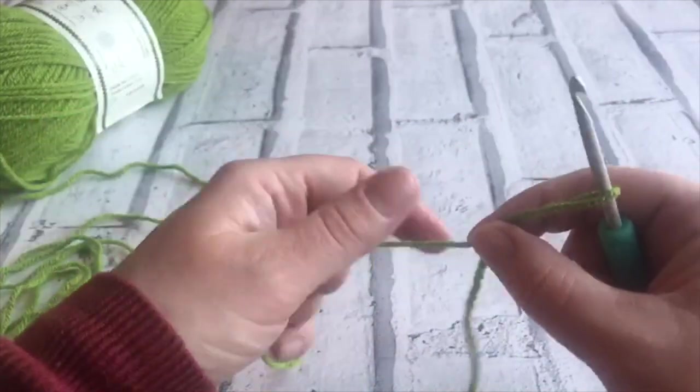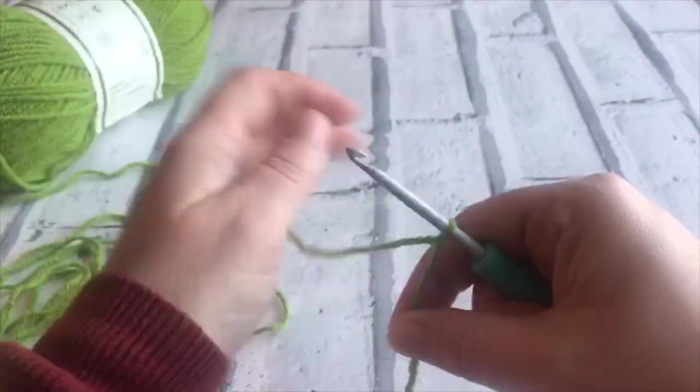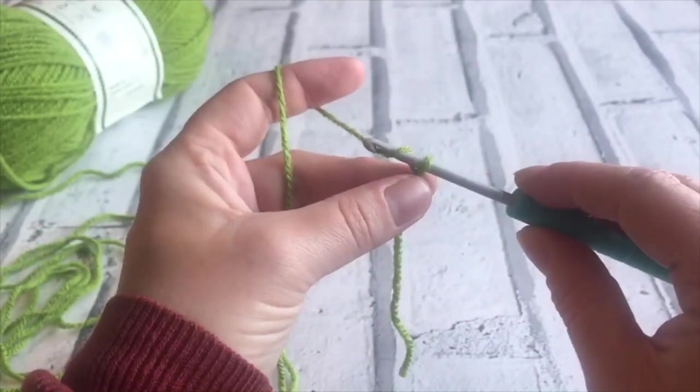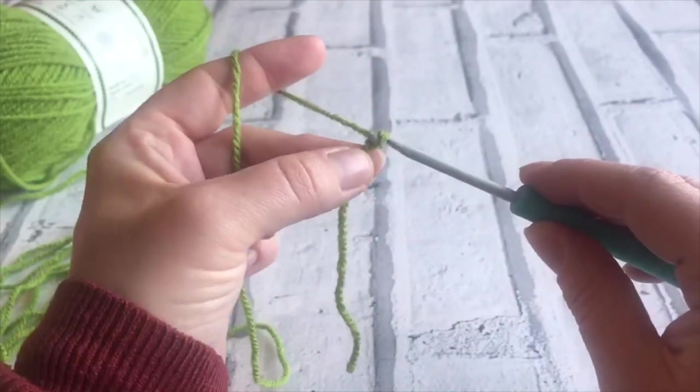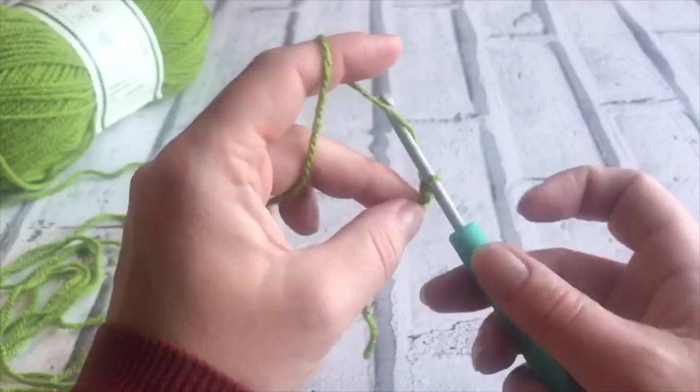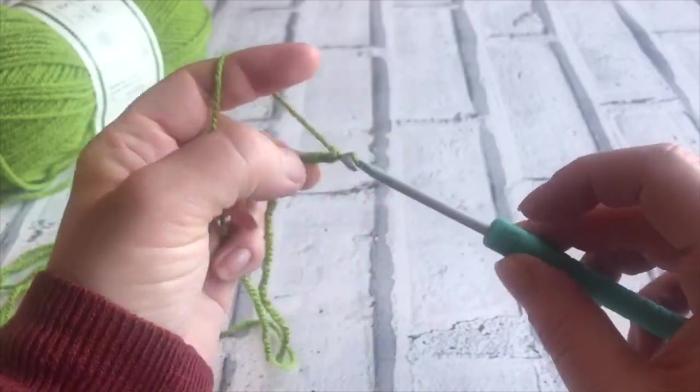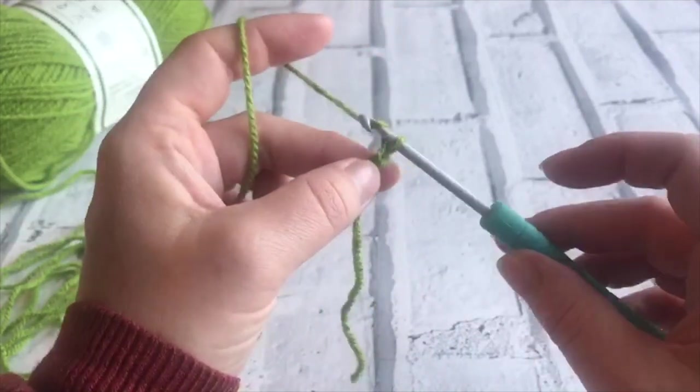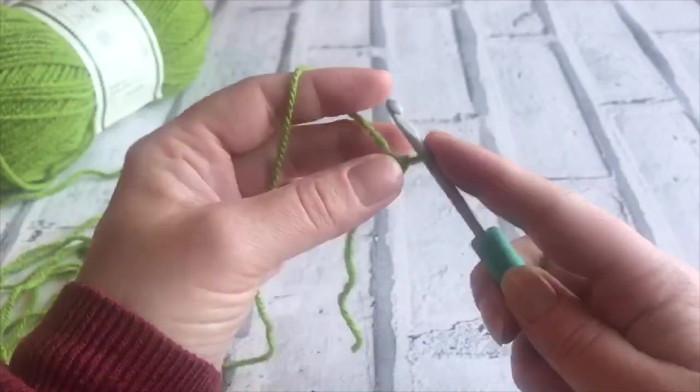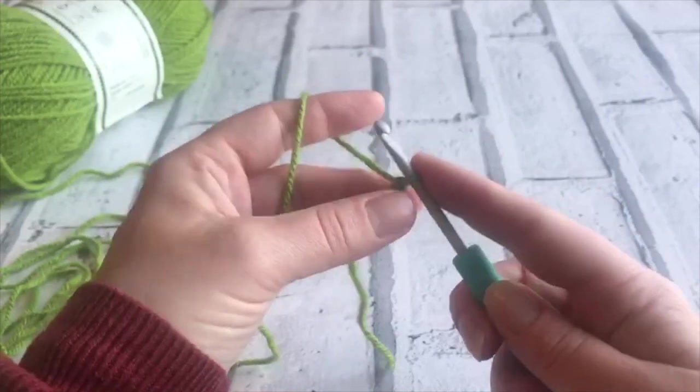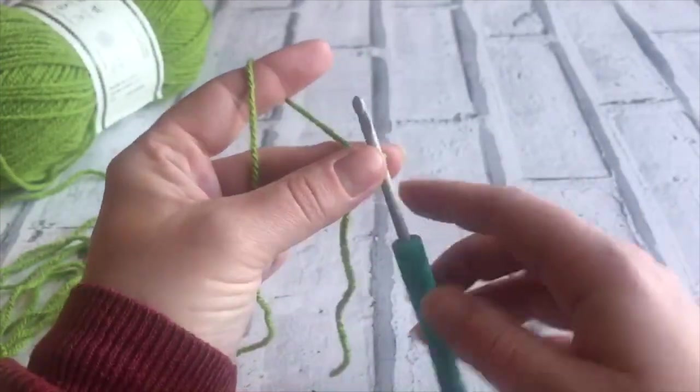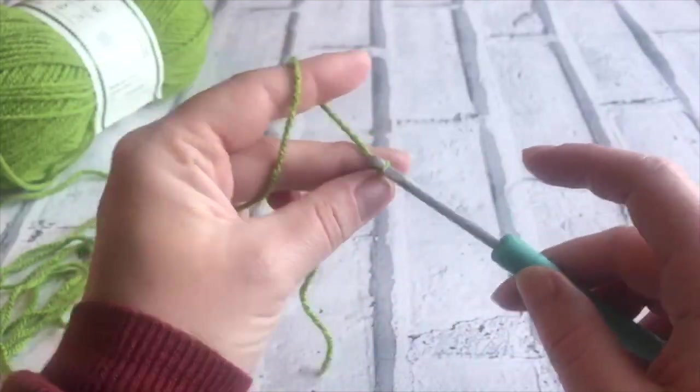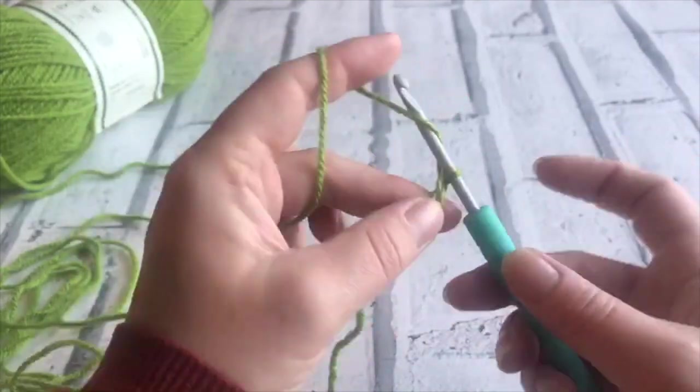So yarn over the hook, put that hook down and it will just catch the yarn to bring it through. Yarn over the hook, bring it through that loop on your hook. So you can go and make as many chains as you want to, or as many as your pattern needs you to make to start.